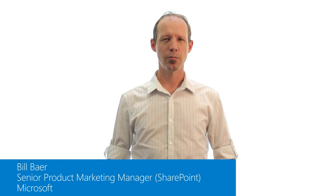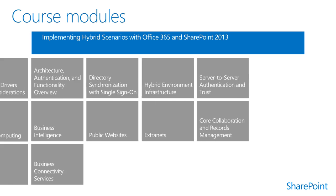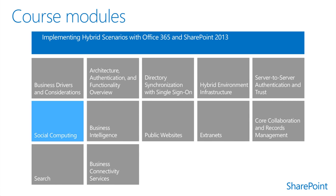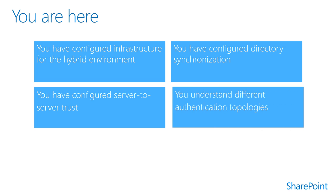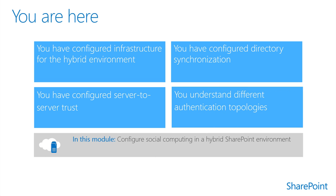Welcome to Implementing Hybrid Scenarios with Office 365 and SharePoint Server 2013, Module 3.1: Social. The content provided in these modules is intended for organizations currently using SharePoint Server 2013 on-premises who have evaluated the benefits of SharePoint Online, are interested in a hybrid SharePoint solution, and would like to learn more about planning a hybrid deployment. This module provides an overview of SharePoint Server 2013 and SharePoint Online social capabilities, including Yammer.